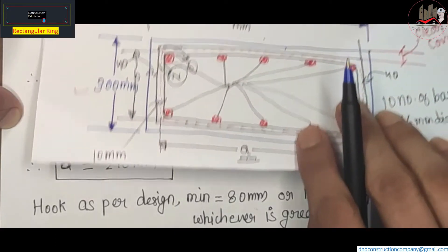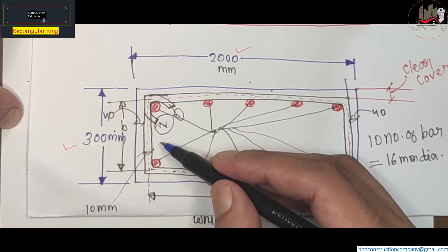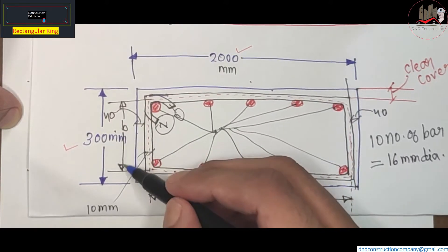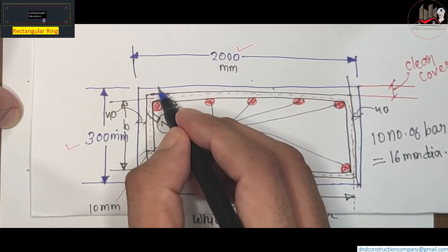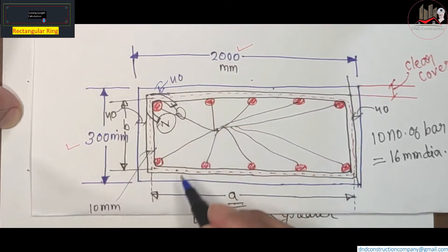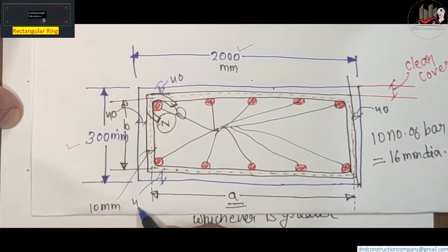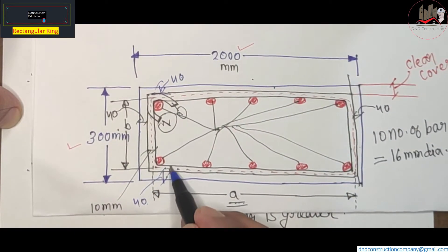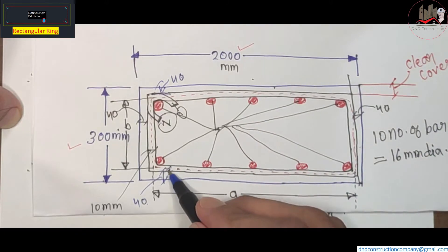Now for B: total width is 300 mm, minus 40 mm clear cover on one side, minus 40 mm clear cover on the other side, minus half the bar diameter on each side (5 mm each). So B = 300 − 40 − 40 − 5 − 5 = 210 mm.